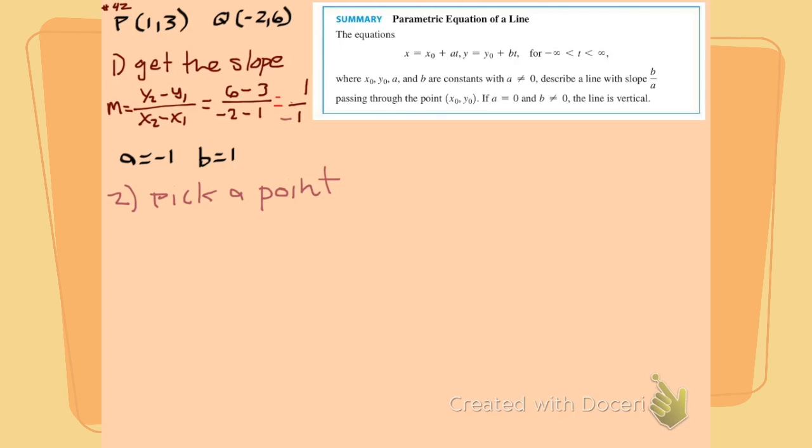We pick a point. How did we get our a and our b? We got our a and our b by looking at this from the slope. All right.